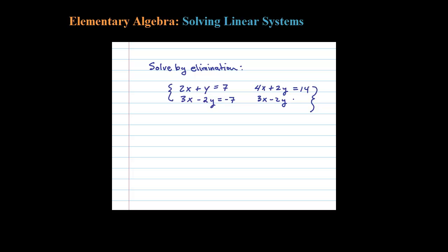Now I did that so I get the equivalent system here where the y terms are opposites. You have a 2y and a minus 2y there, so when you add the two equations together those y terms are going to add to 0 and eliminate.